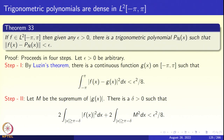Trigonometric polynomials are dense in L²(−π, π). The function we take is not continuous — it is simply in L². Suppose f ∈ L²(−π, π); then given any ε > 0 there is a trigonometric polynomial p_N(x) such that the L² norm of f(x) − p_N(x) is less than ε. The proof proceeds in four easy steps. First, let ε > 0 be arbitrary.